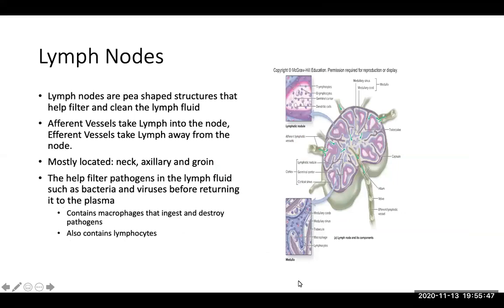Your lymph nodes are P-shaped structures that help filter and clean the lymph fluid. Afferent vessels will take lymph into the node, and efferent vessels will take lymph away from the node. They are mostly located in the neck, axillary region, and groin region, and they help filter pathogens in the lymph fluid, such as bacteria and viruses, before returning all the lymph fluid back into the plasma and the blood. They will contain macrophages that ingest and destroy pathogens, as well as contain lymphocytes.